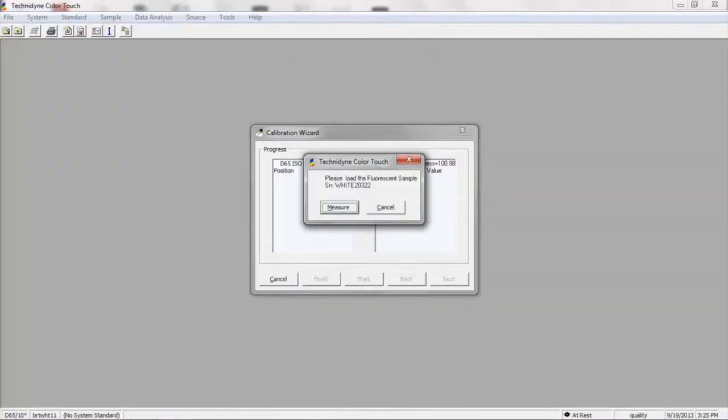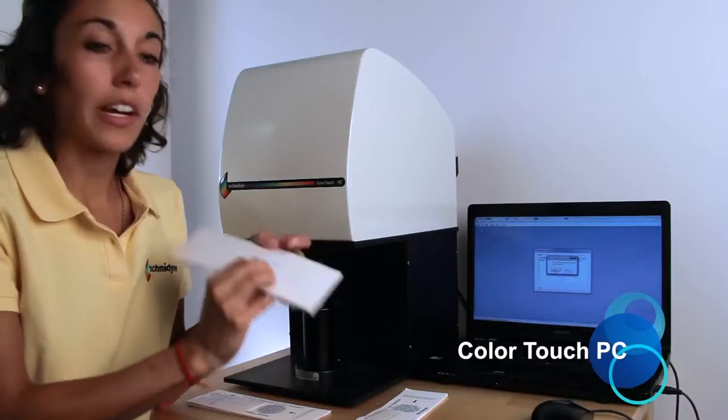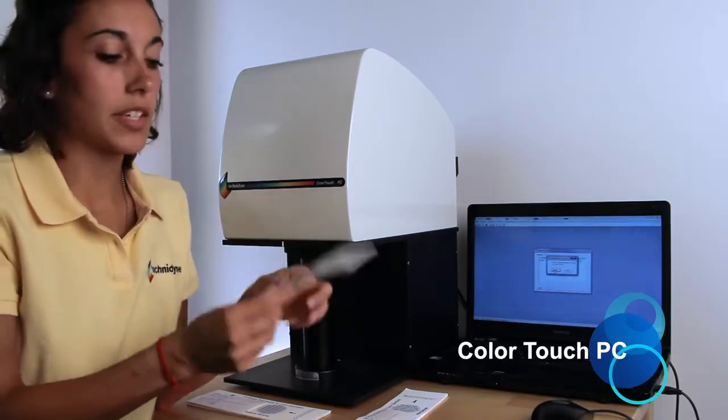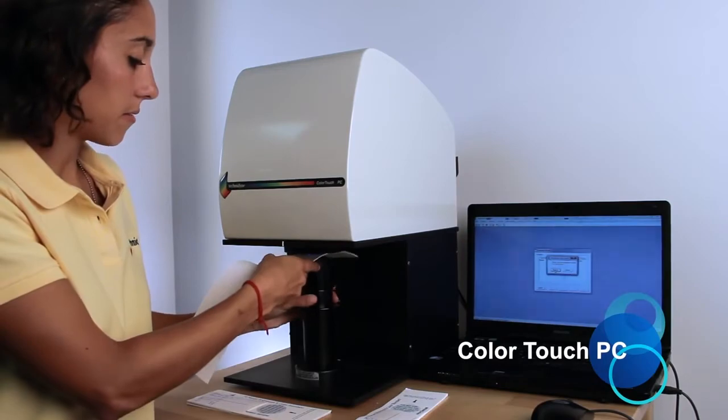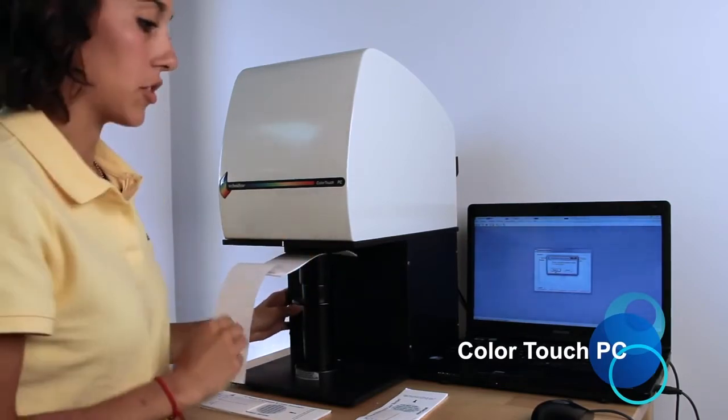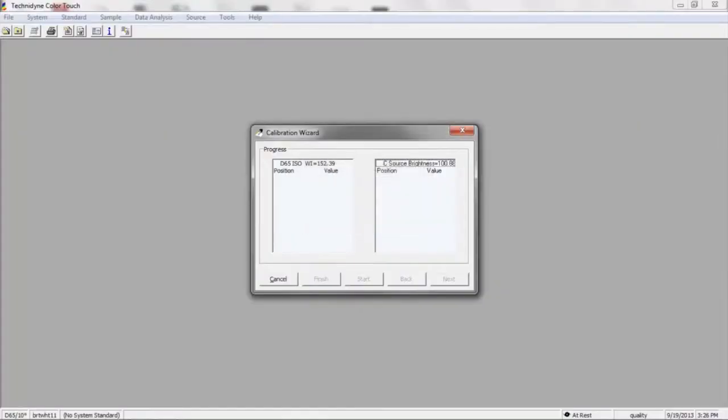Next, it wants us to load our fluorescent standard. Now the serial number for the fluorescent standard is on the back. So once we verify that that matches what the computer's giving us, we can move that front sheet, load our standard, and press the green button to measure. This is to establish proper filter position for the D65 and C sources.